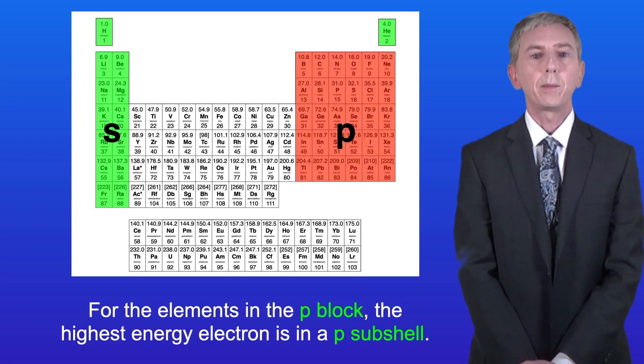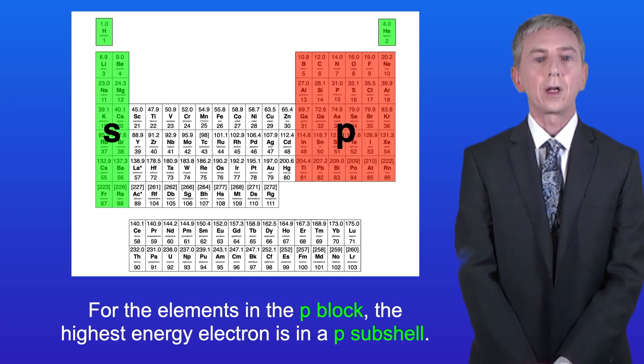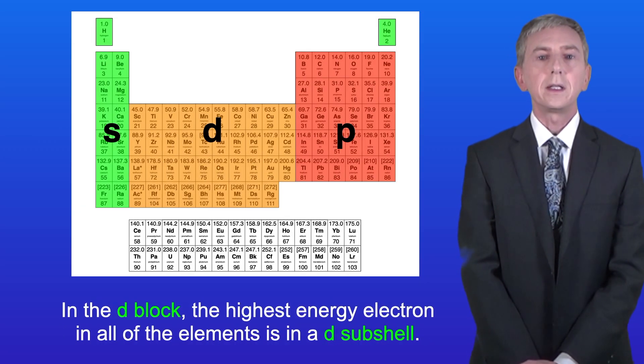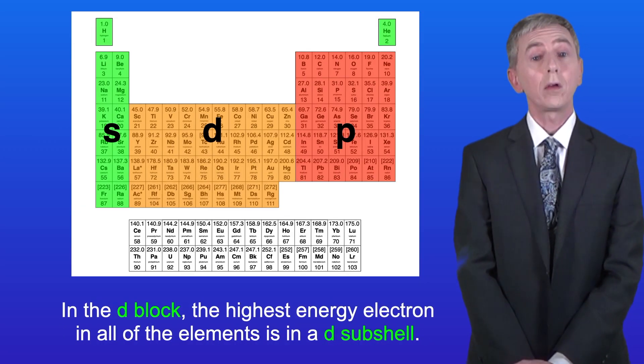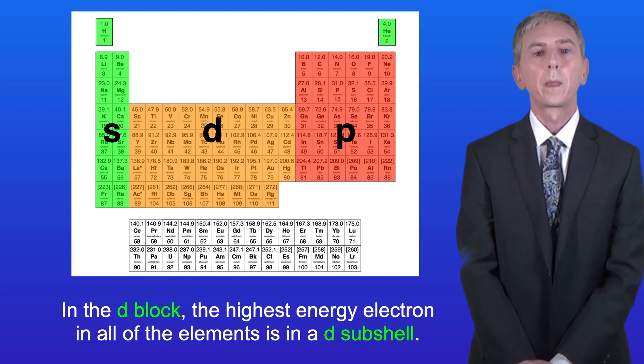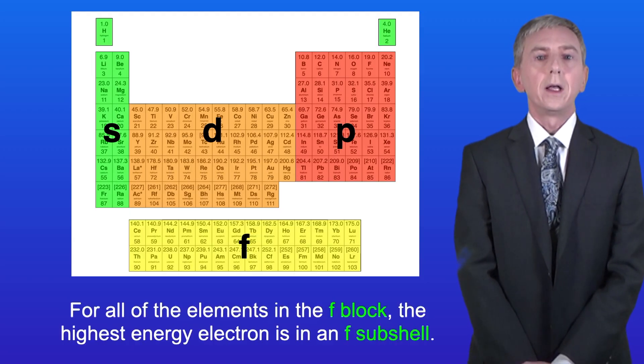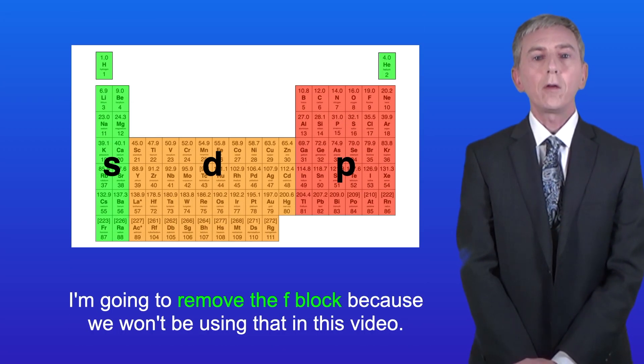For the elements in the p block, the highest energy electron is in a p subshell. In the d block, the highest energy electron in all of the elements is in a d subshell. And lastly we've got the f block. Again, for all of the elements in the f block, the highest energy electron is in an f subshell. Now I'm going to remove the f block because we won't be using that in this video.